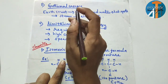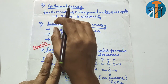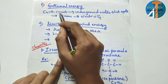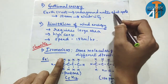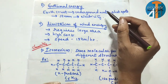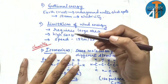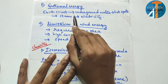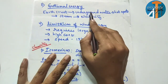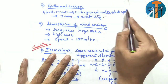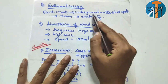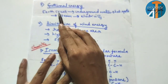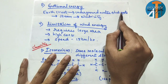Next question: explain geothermal energy. Step by step — earth crust, underground water, hot spots. Underground water moves to hot spots and there we observe steam producing, and we use that steam to convert into electricity.